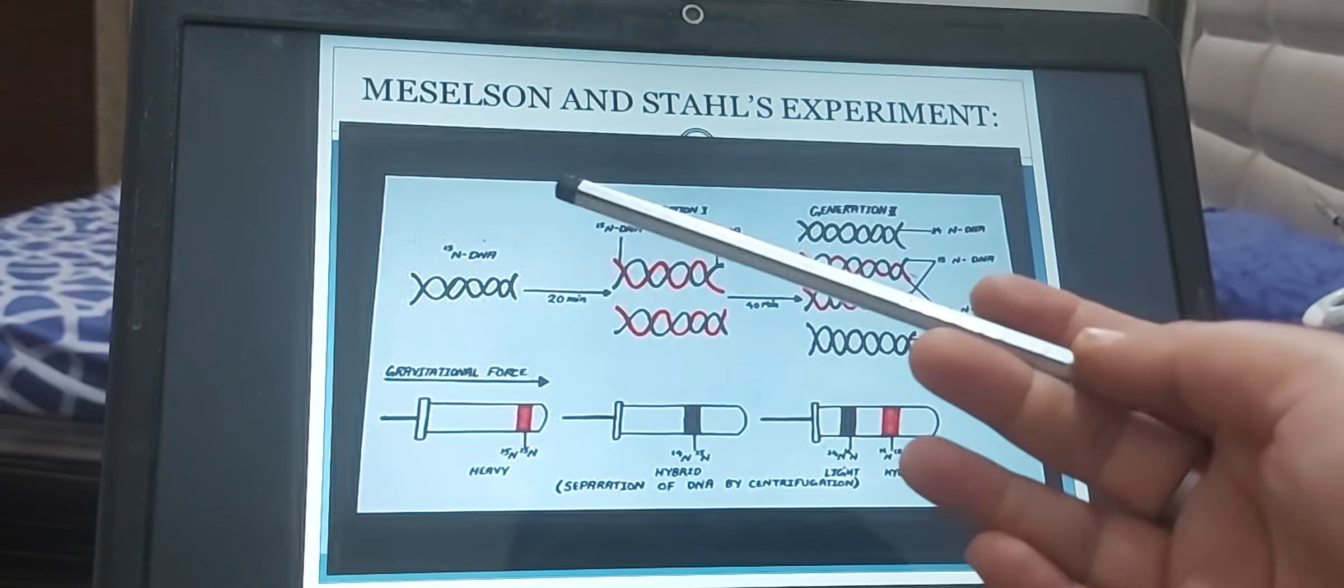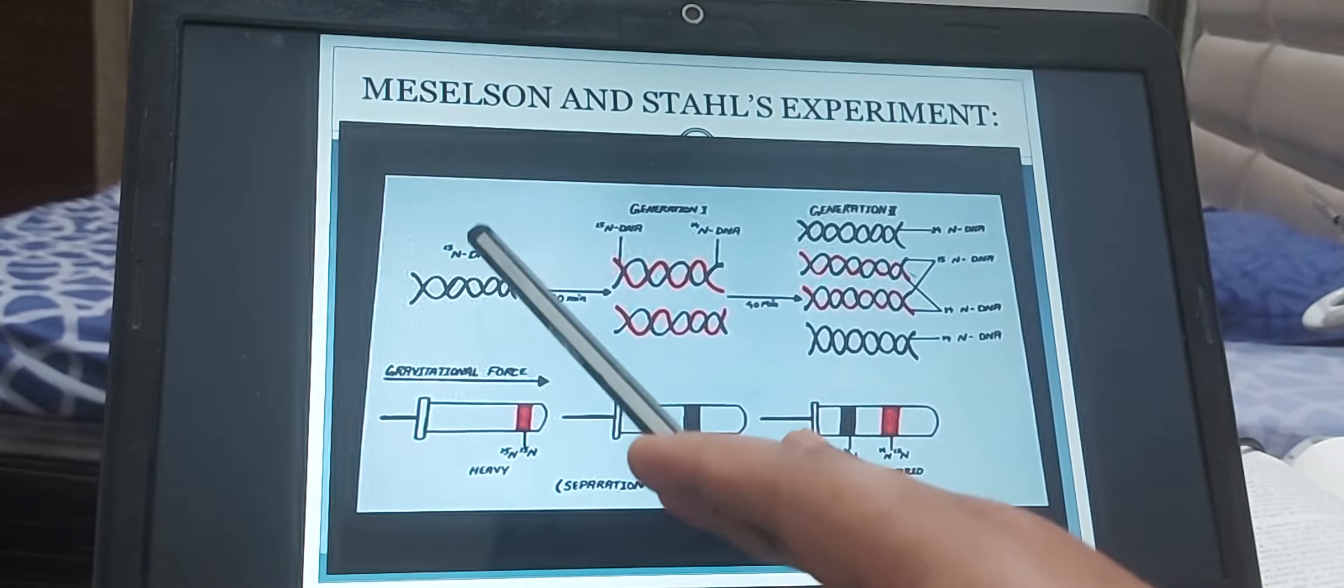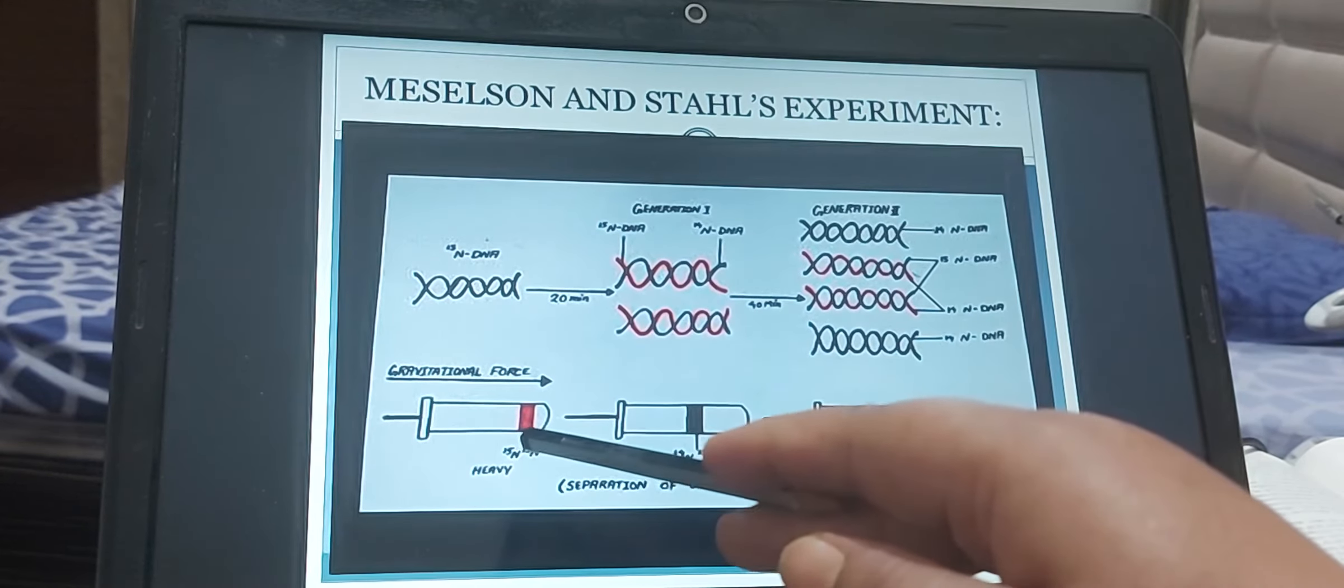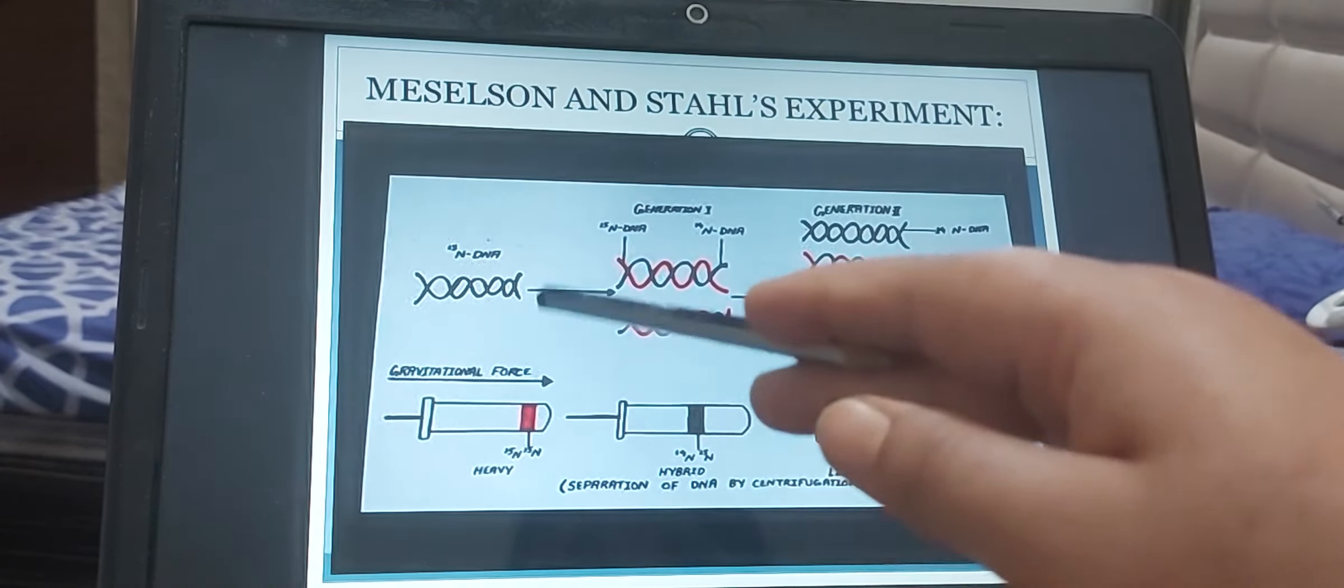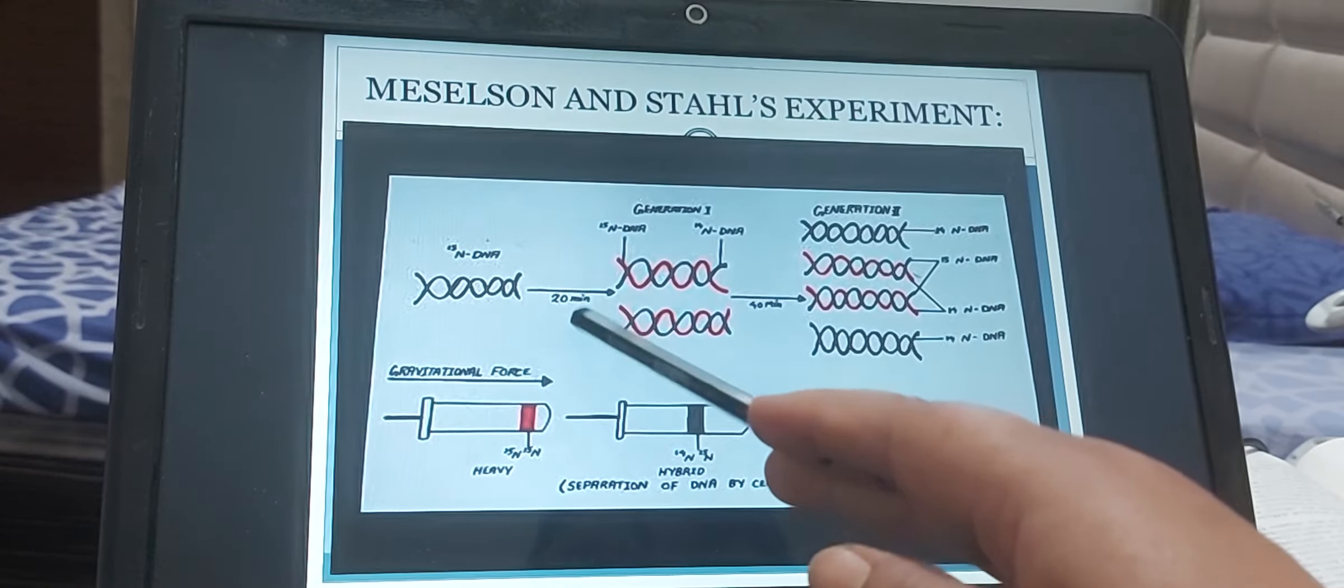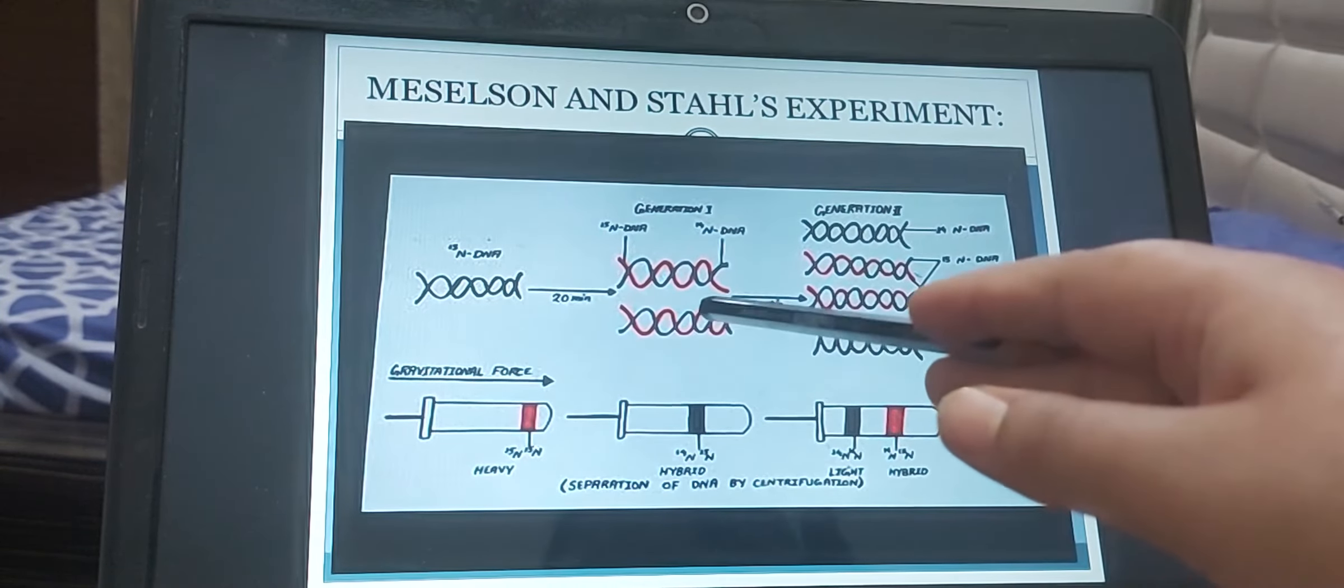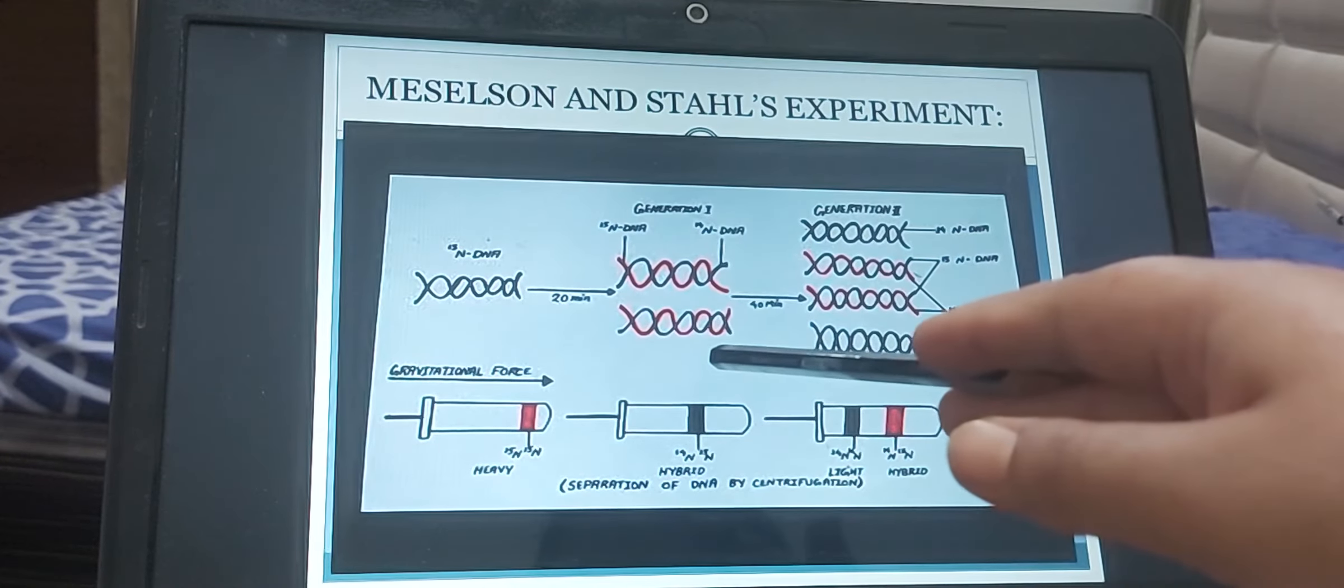We can extract it out. So when they have the complete DNA of the E. coli is N15, they take it as a parental generation. And when they extract the DNA of this generation, they found that the band formed is at the base of the test tube because it is the heavy isotope of nitrogen. And we know that E. coli takes 20 minutes to multiply. So after 20 minutes, when one E. coli has given rise to the two new E. coli, so from this parental DNA, the two new copies of DNA has been formed.